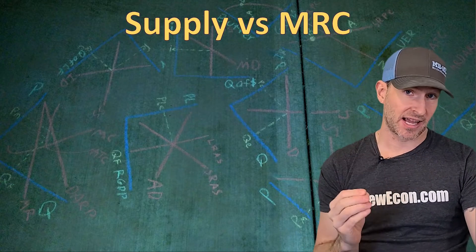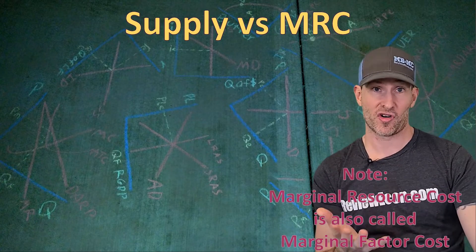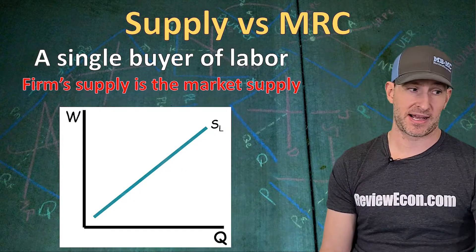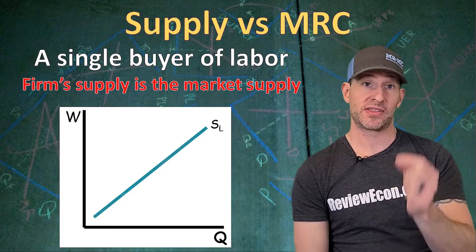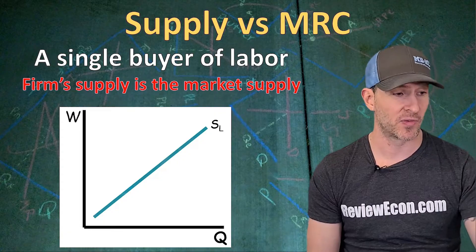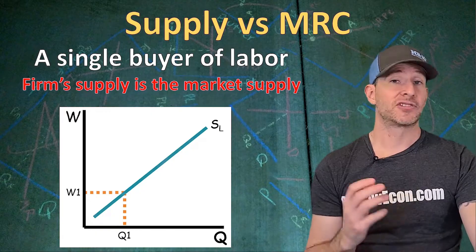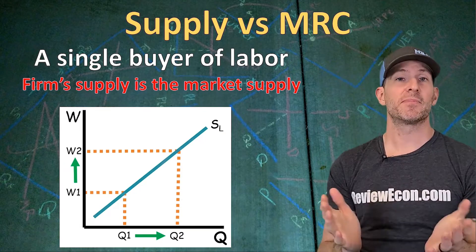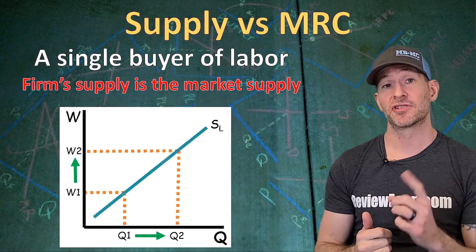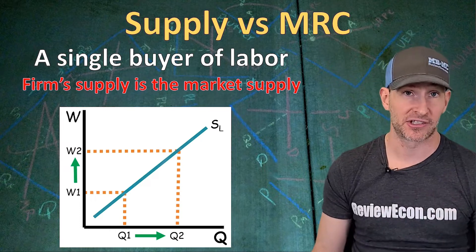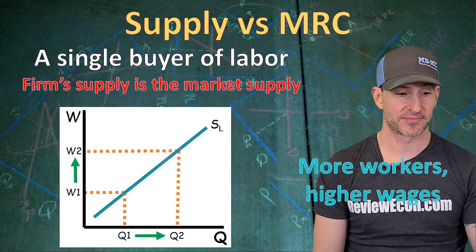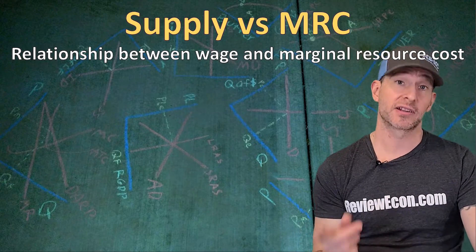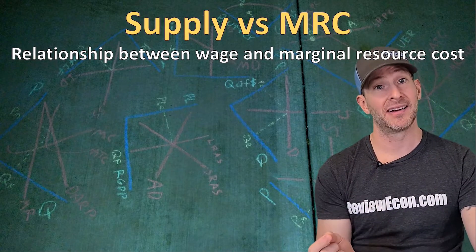Next, we're going to look at the supply of labor for a monopsony and how that relates to the marginal resource cost. Remember, there is only one single buyer of labor within a monopsony market, so the firm's supply curve is going to be the market supply curve. It's going to be upward sloping — we will see a positive relationship between the wage and the quantity of workers willing and able to work. If the firm wants to increase the quantity of workers hired, it's going to have to raise the wage. This is different from a perfectly competitive market, where the supply equals the marginal resource cost.